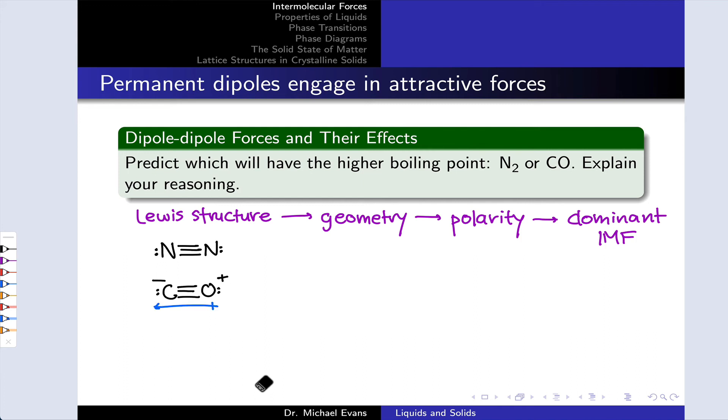The geometries, of course, both molecules are linear. And in terms of polarity, CO does have a permanent dipole moment. It involves carbon and oxygen connected to one another, opposite formal charges. There's definitely a dipole moment in that molecule. It is polar.